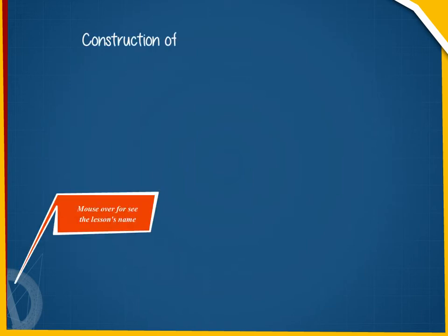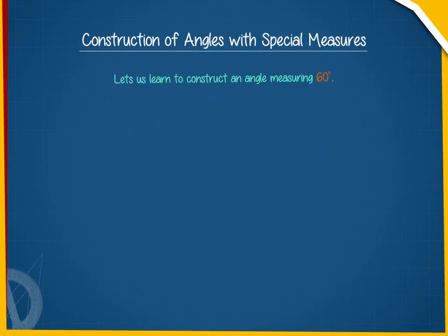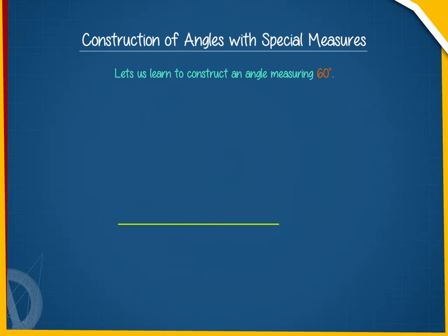Construction of Angles with Special Measures. Let us learn to construct an angle measuring 60 degrees. Draw a ray, say Lm.